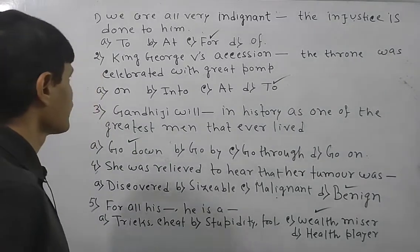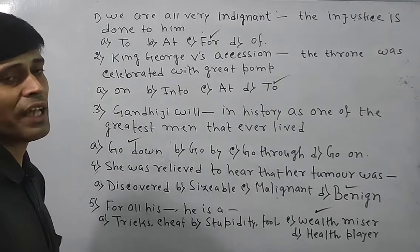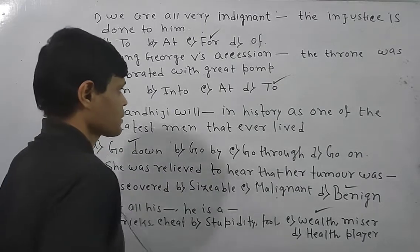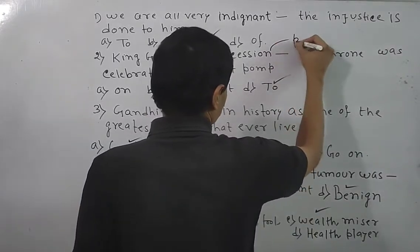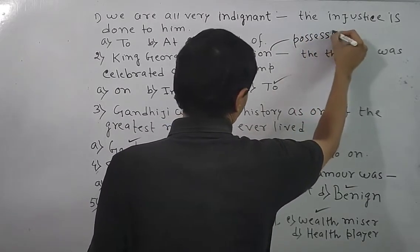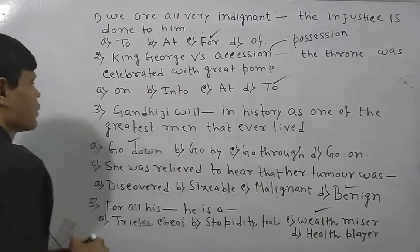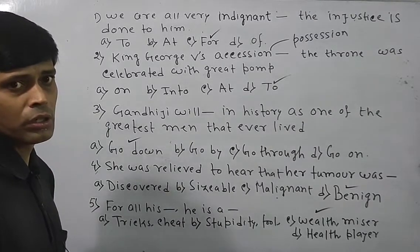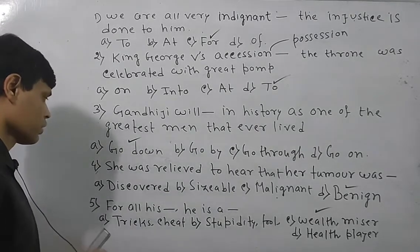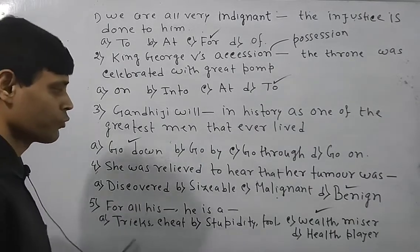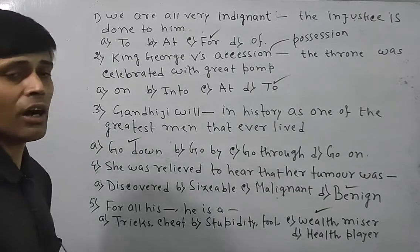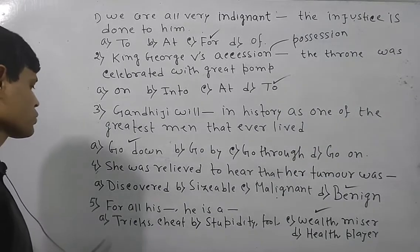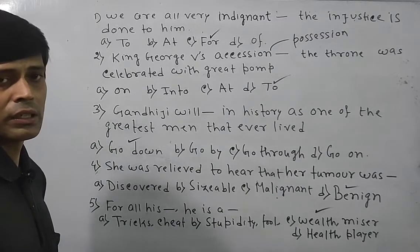To recap: In question 1, 'for' is the answer — functioning as a conjunction meaning 'because'. In question 2, 'to' is the answer — accession always takes 'to'. In question 3, 'go down' is the answer — meaning remembered or recorded. In question 4, 'benign' is the answer — benign means not harmful, while malignant means very harmful. In question 5, 'wealth' and 'miser' are the answers — in spite of having huge wealth, he is a miser.